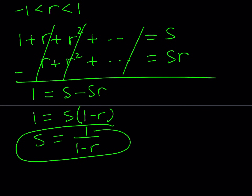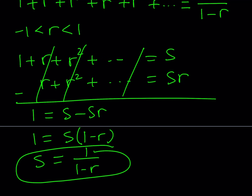For this to work, r needs to be between -1 and 1. If r is greater than 1, you're adding quantities greater than 1 and the sum diverges. The same thing happens for negative numbers outside that range, so we want r to be between -1 and 1.